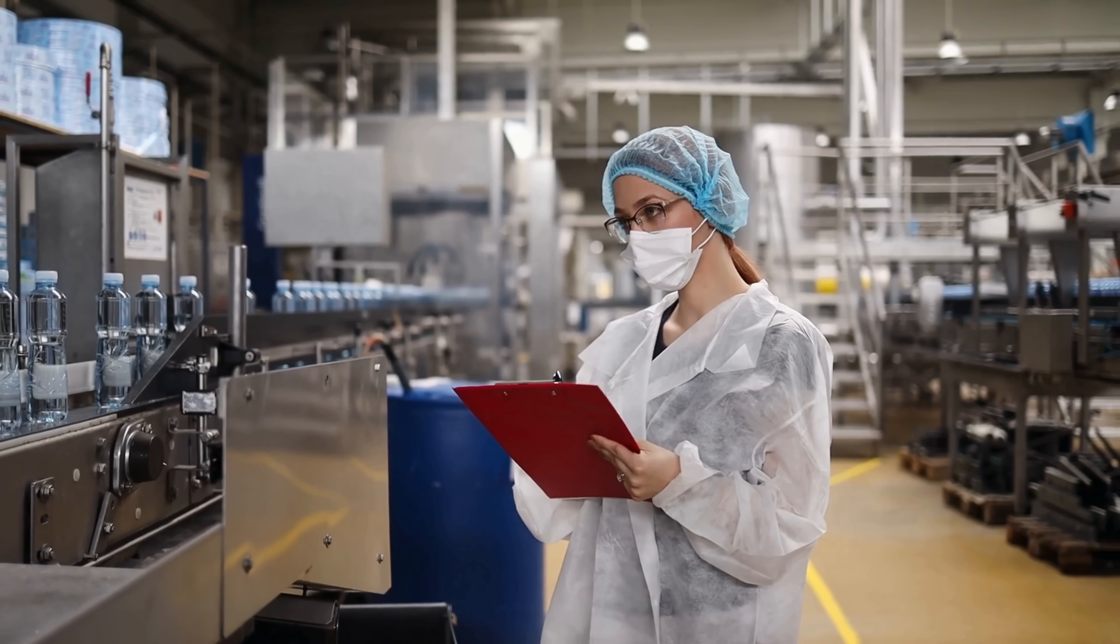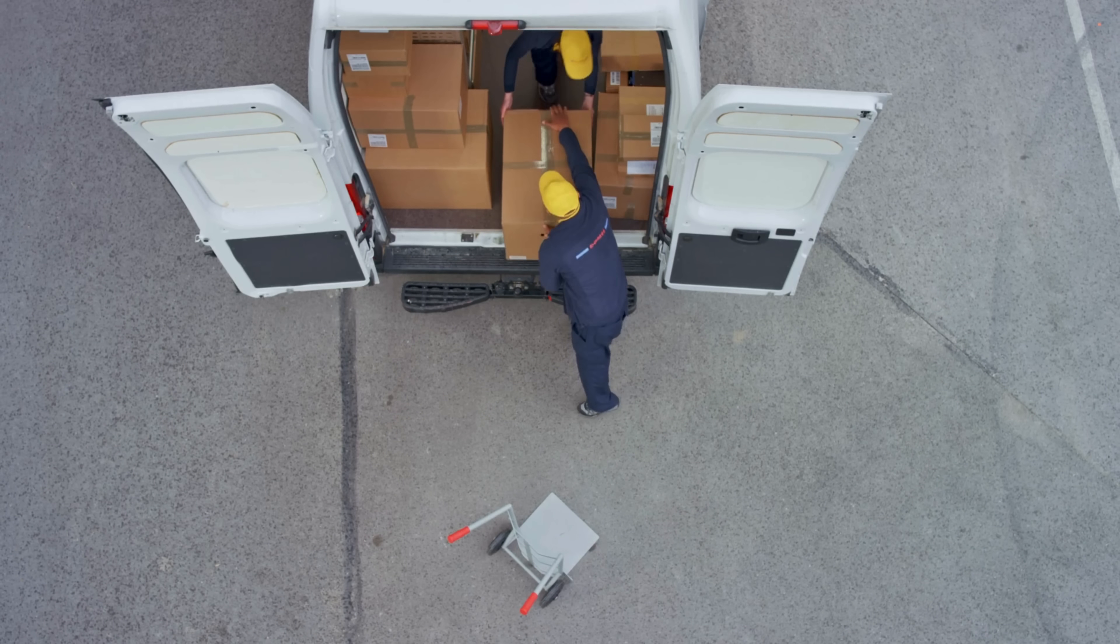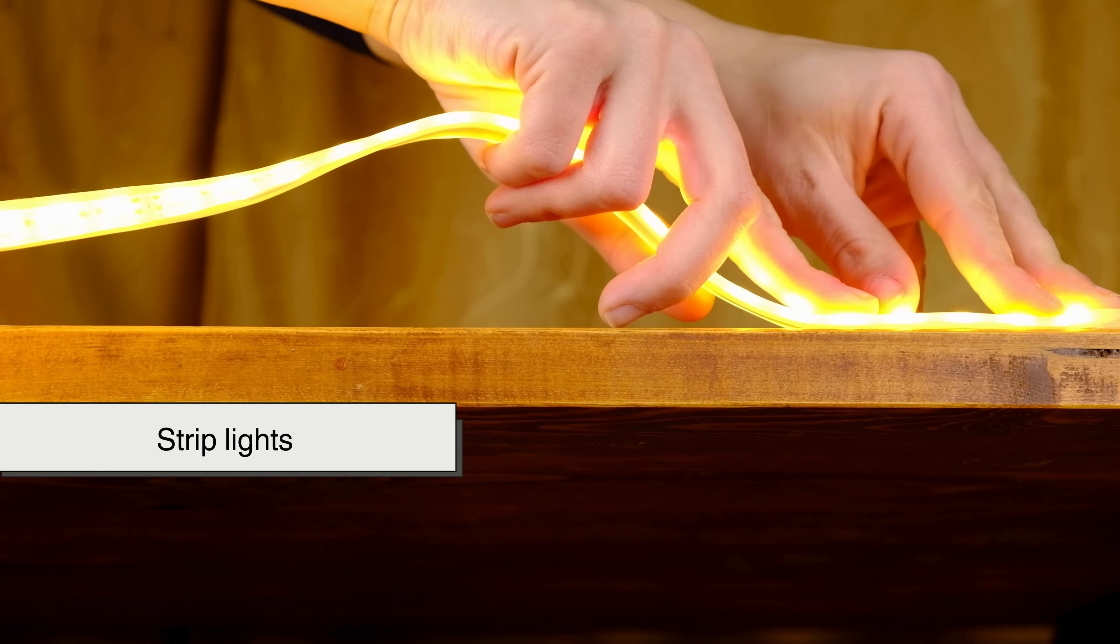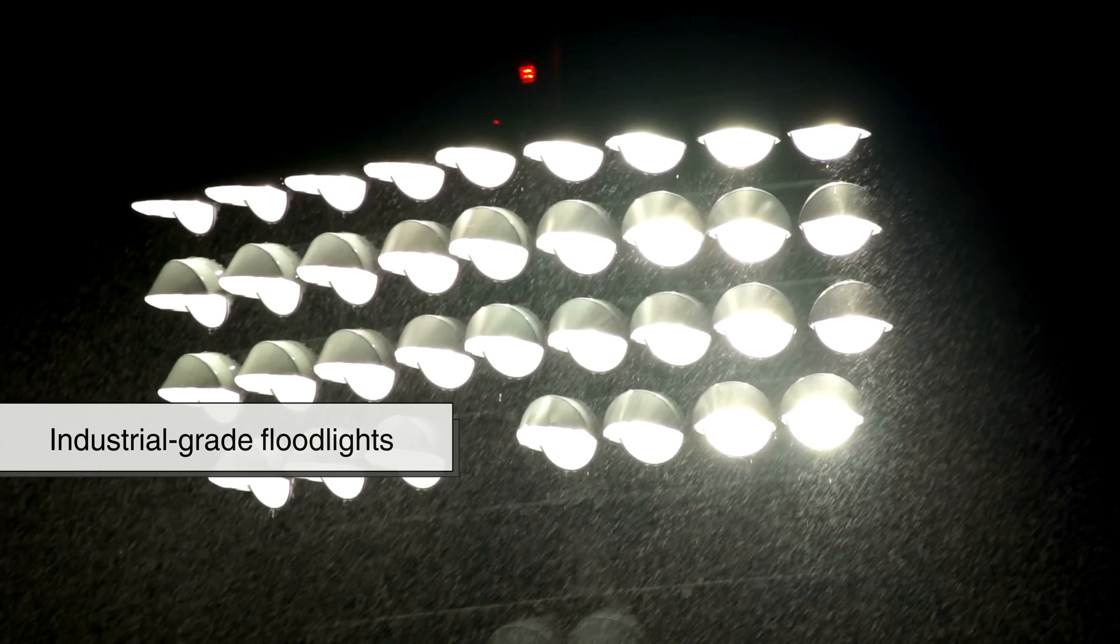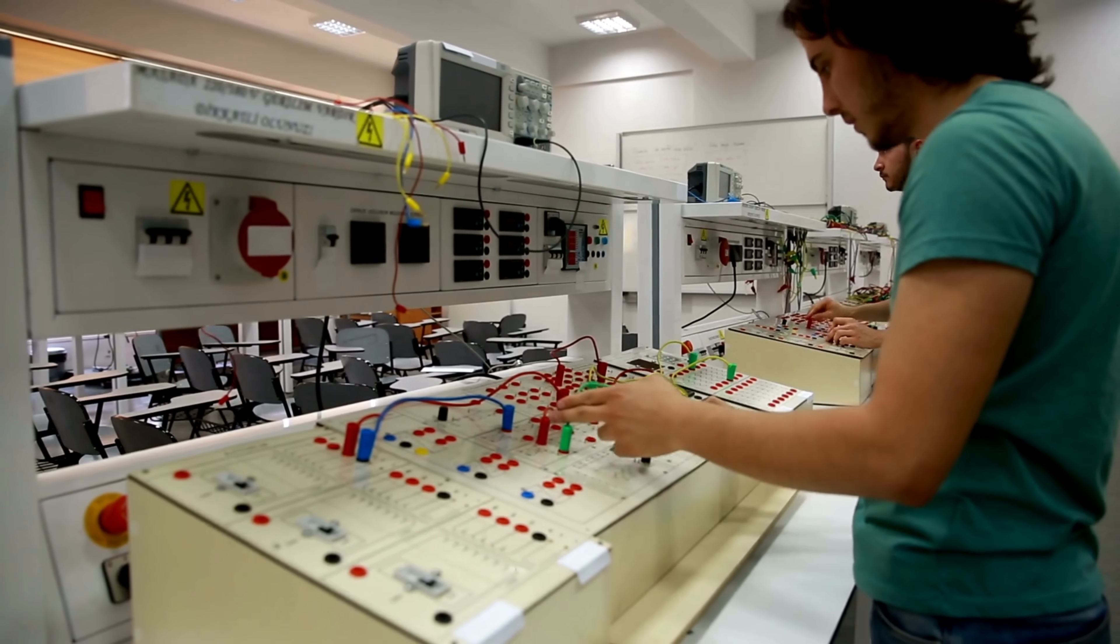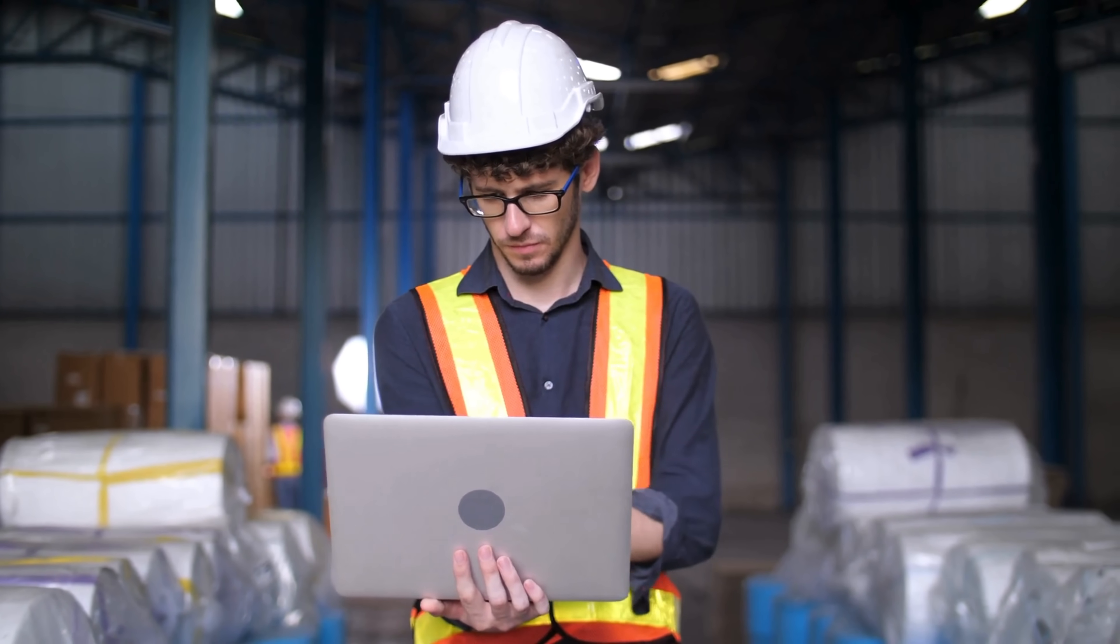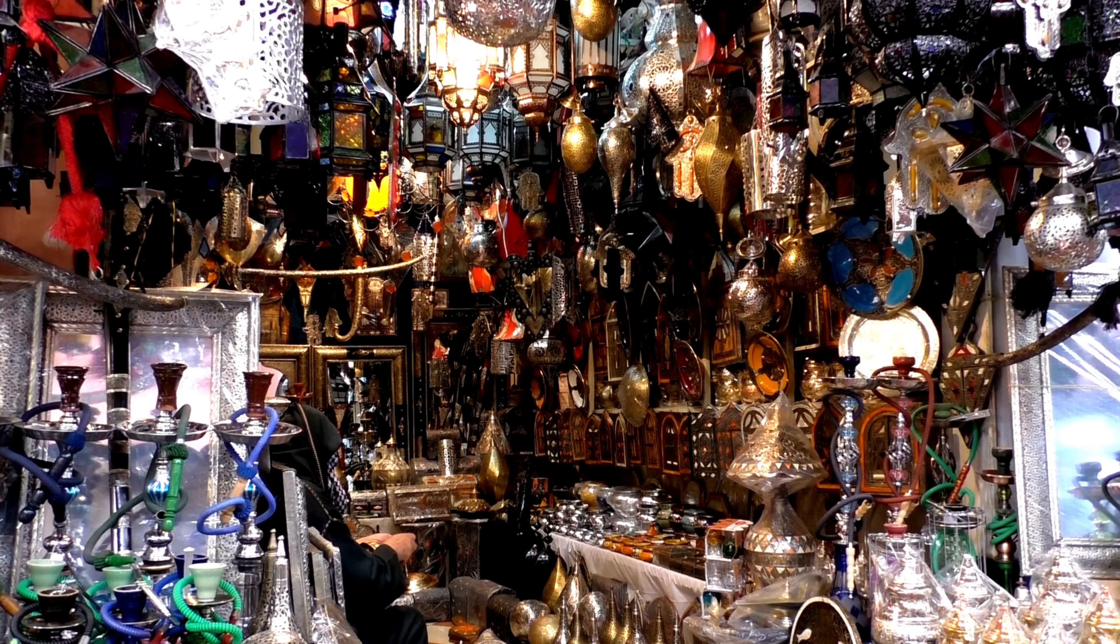Once the LEDs pass quality control, they are packaged and distributed for commercial and residential use. They are sold in various forms, from LED bulbs and strip lights, to industrial grade flood lights and automotive headlights. The final product represents a combination of precision engineering, advanced semiconductor technology, and innovative designs.